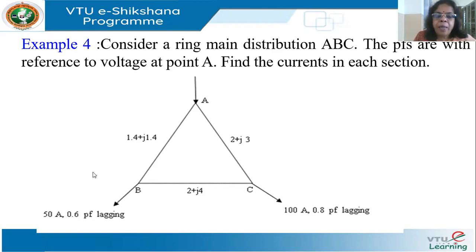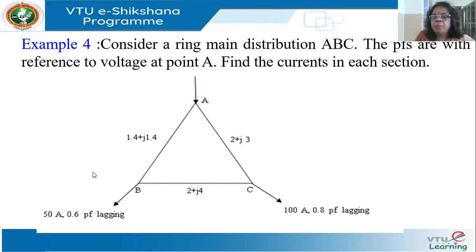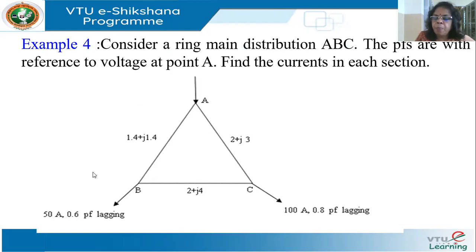Now let us consider an example of ring main distribution with nodes A, B, and C. The power factors are all with reference to the voltage at point A. The impedances are: ZAB = 1.4 + j1.4 ohms, ZBC = 2 + j3 ohms, and ZCA = 2 + j4 ohms. We are given two load currents and asked to find the currents in each section.